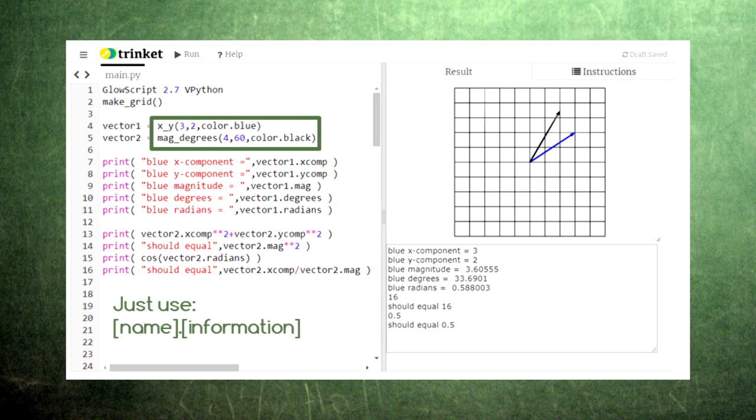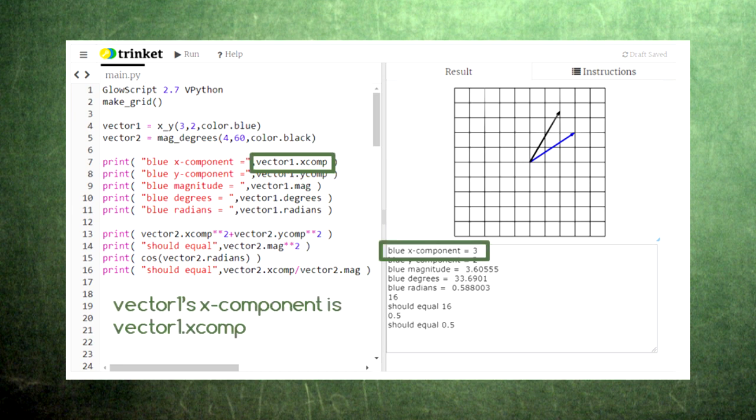To use this information, all you need to do is type the vector's name, a dot, and then the information you want. So, to print vector1's x component, we just need to type vector1.xcomp. In programming terms, vector1 is an object and xcomp is an attribute of that object. The dot is like saying you want the x component that belongs to the object called vector1.